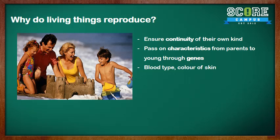What are the characteristics that are passed on in humans? Some of them include blood type, colour of skin, colour of eyes, and there are many more characteristics that are passed on. In a plant, the characteristics that are passed on would be taste of fruit, colour of flower, and again, there are many more characteristics that are passed on.